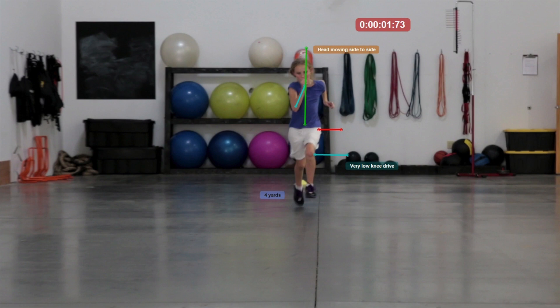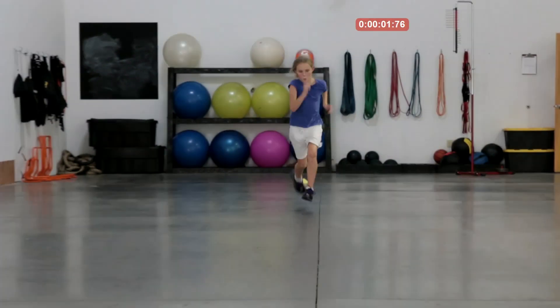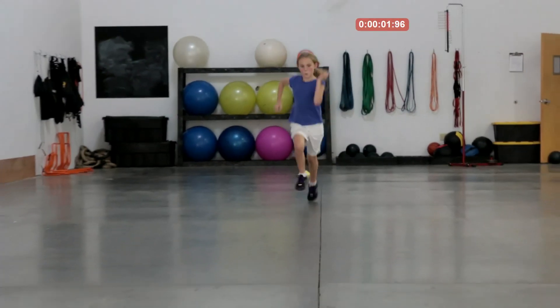Again, she's offline. The green line should split her eyes, she's to the side of that, and that's caused by the arms crossing the body. You can see the right arm coming across her face there, and that's all because of the east-west motion from her arms and her shoulders.